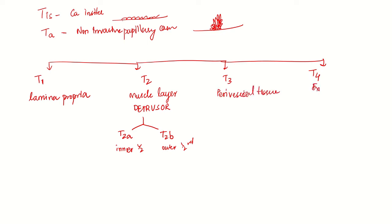T4 is extravesical. T3 is divided into T3A and T3B. T3A is microscopic, T3B is macroscopic invasion. T4 is again divided into T4A and T4B.